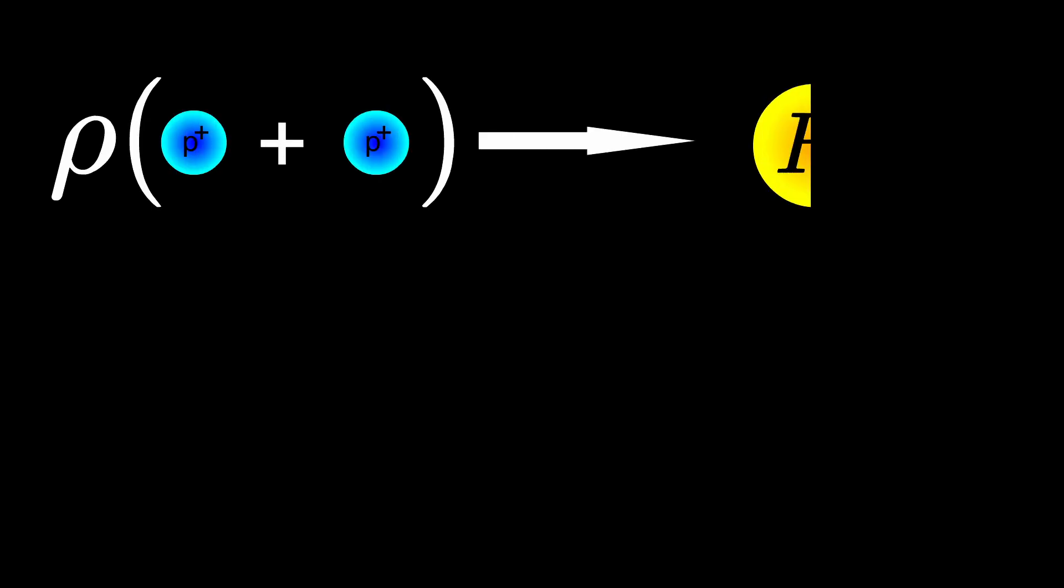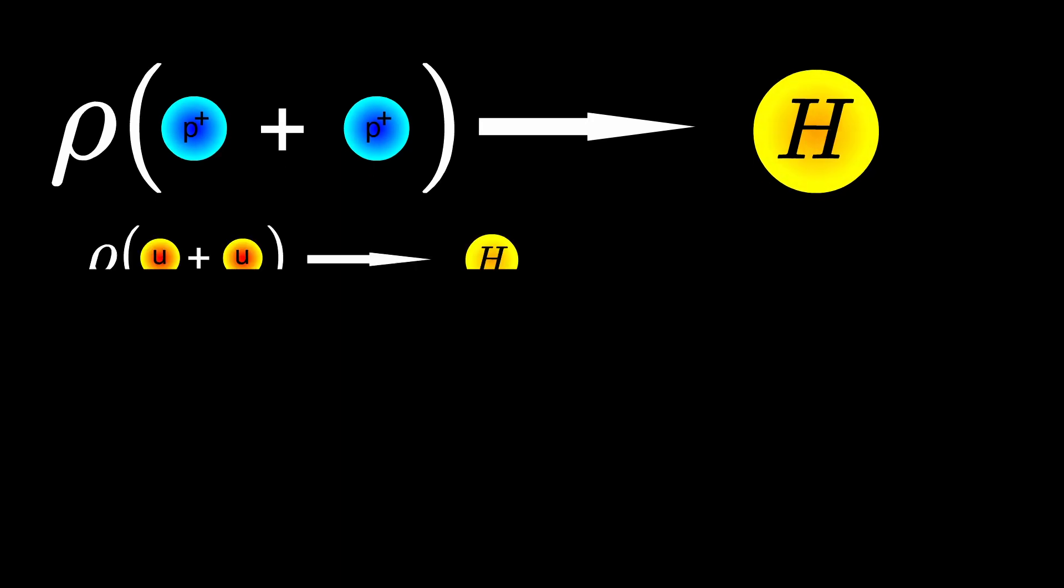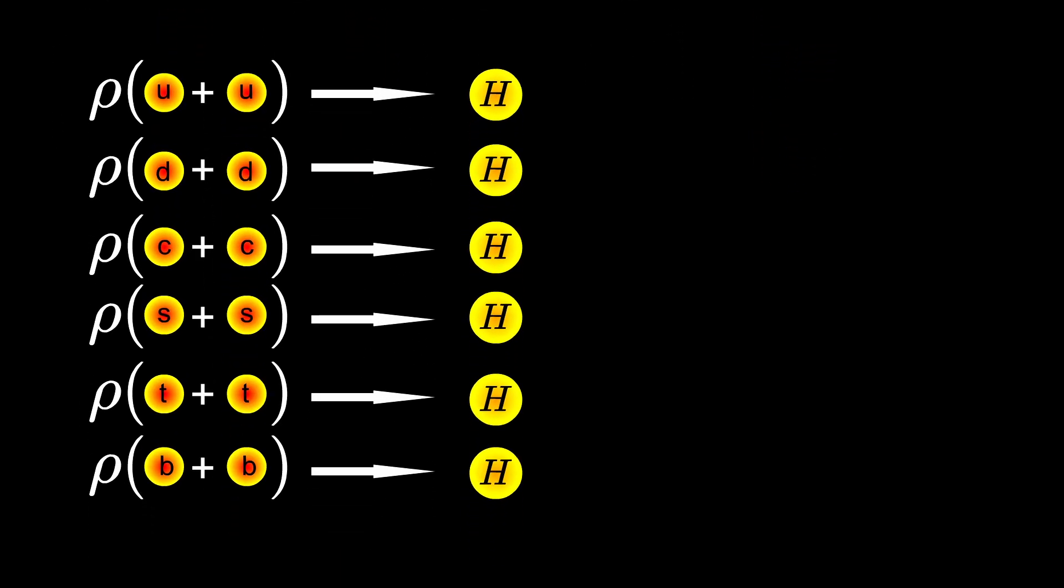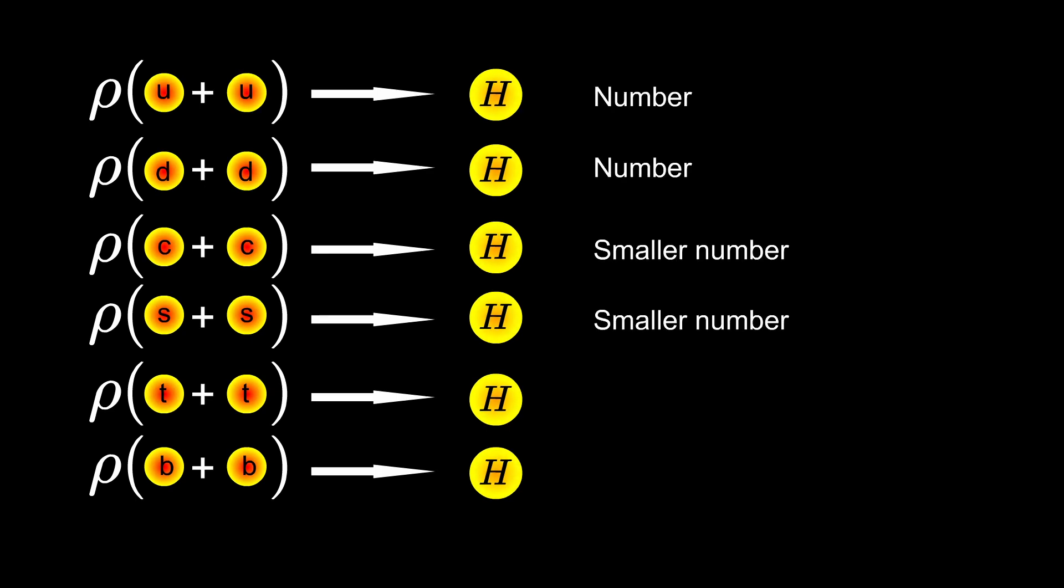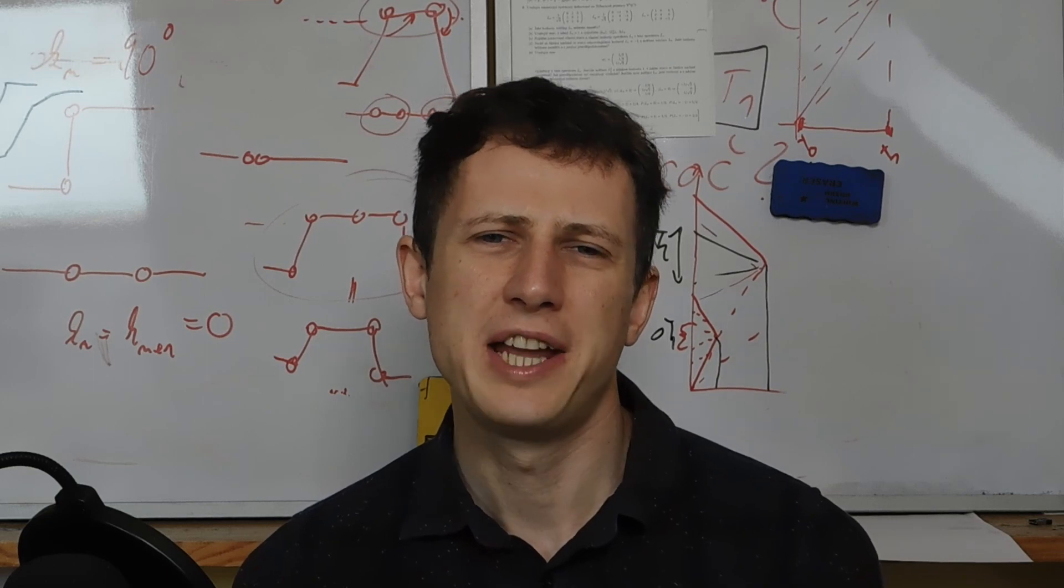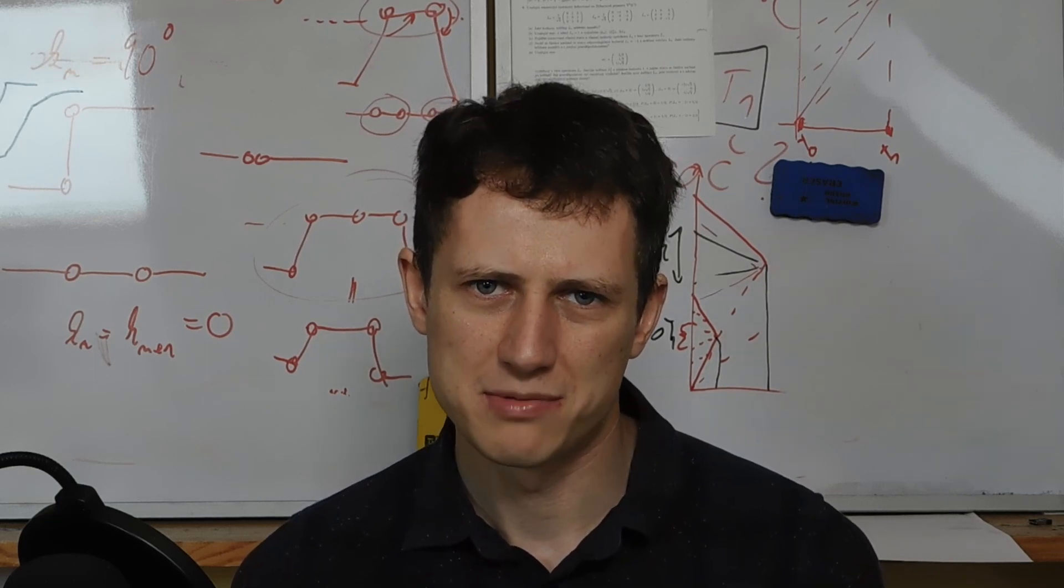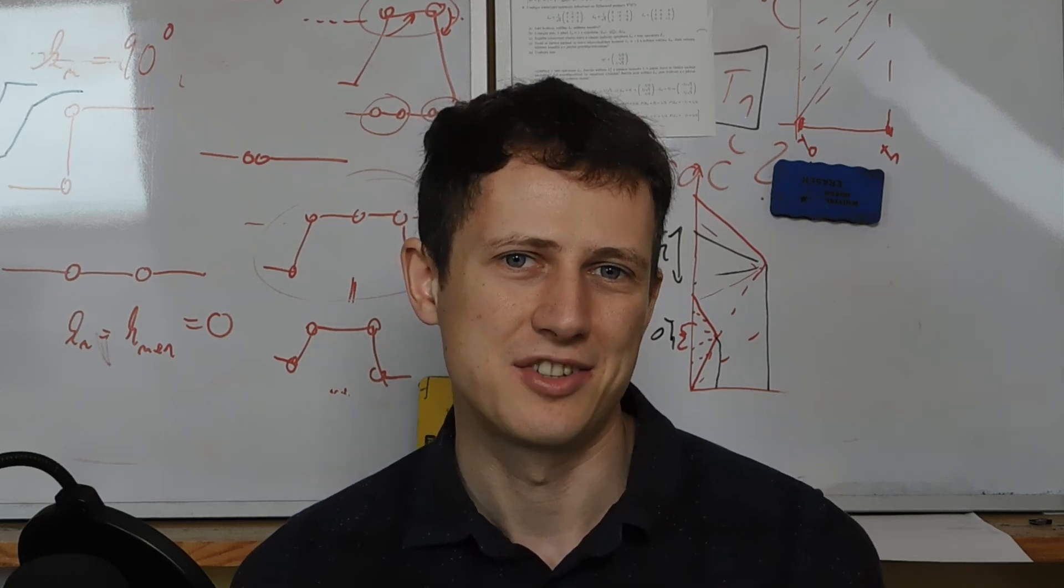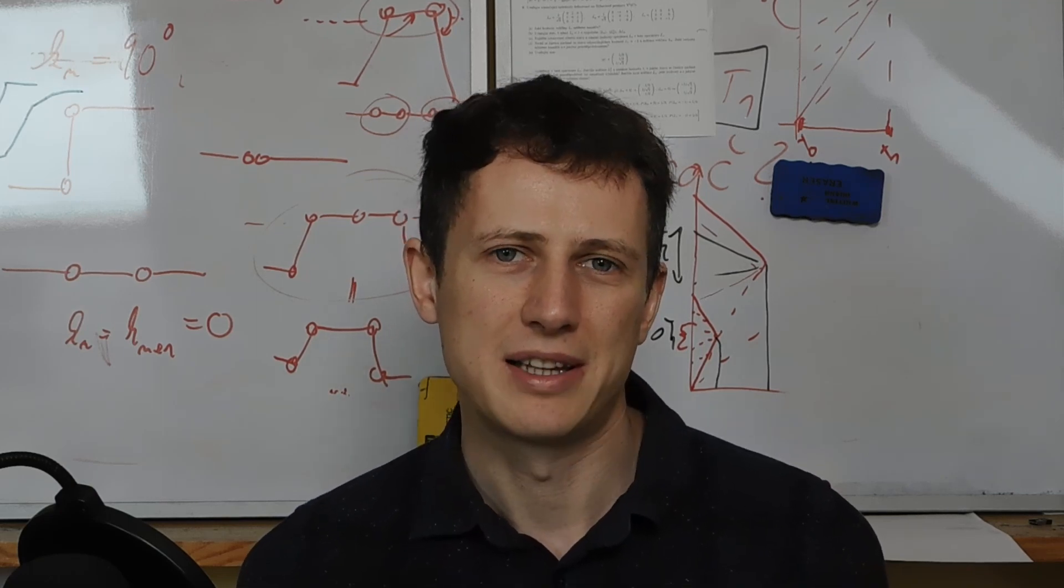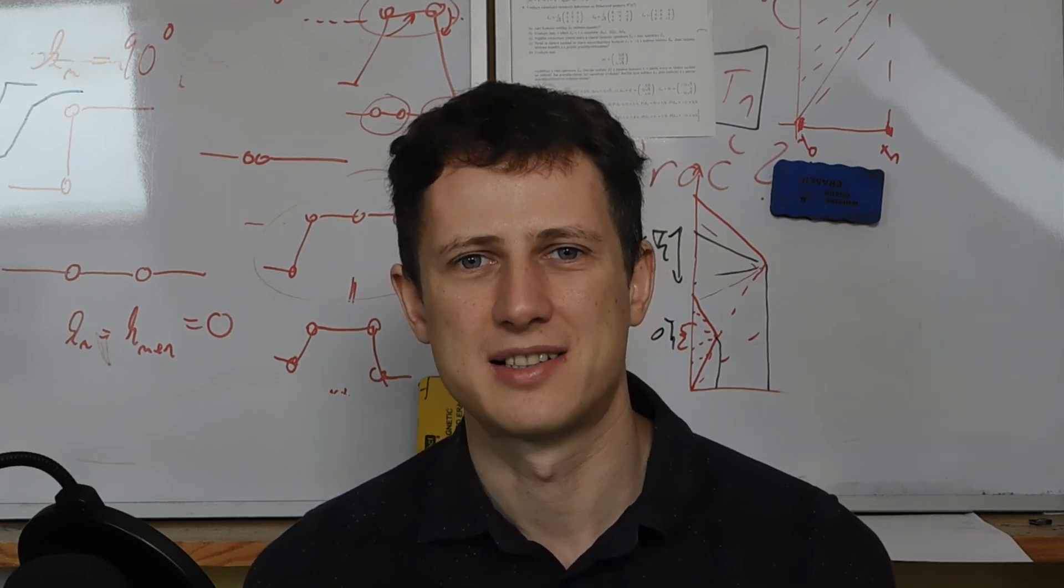So if you want to calculate the production cross-section of two protons to Higgs, then you have to calculate it separately for each quark and anti-quark combination. Each combination gives you a contribution to the total cross-section which depends on the energy at which you collide the protons. But wait, we know the energy of the colliding protons, but it is quarks what we are colliding. So we don't really care about the energy of the entire proton. But how can we know the energies of the quarks?